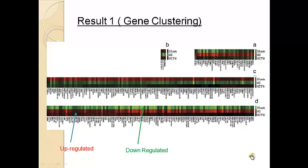For the results, gene cluster analysis was done using cluster software. Red indicates when a gene is up-regulated and green when it is down-regulated. Picture A shows genes whose expression was increased by MI but was reduced or normalized by T4 treatment. Picture B shows genes whose expression was decreased by MI but normalized by T4 treatment. Picture D shows genes whose expression was increased by MI but not reversed by T4 treatment.